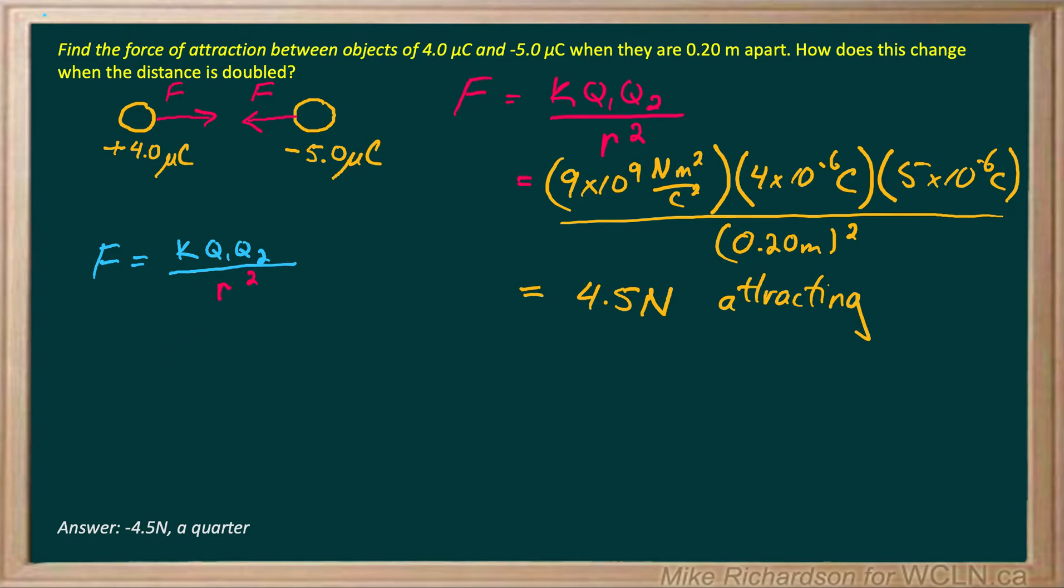So my equation is going to look like this: K, Q1, Q2, all over 2R, all squared.